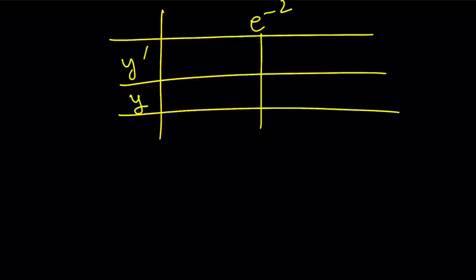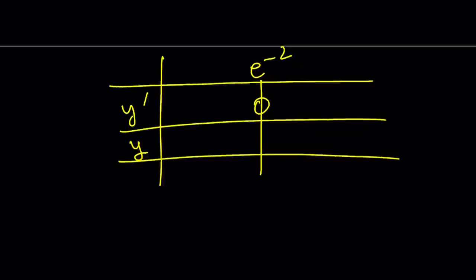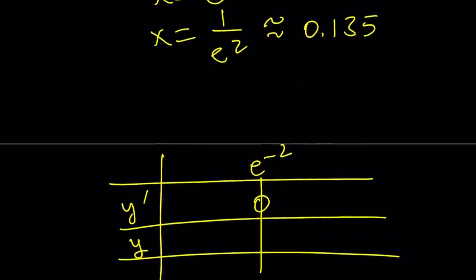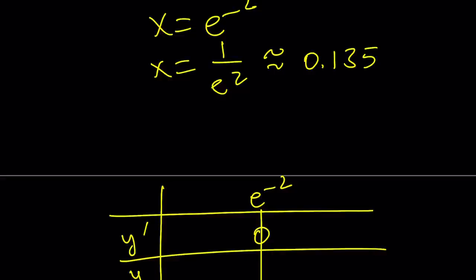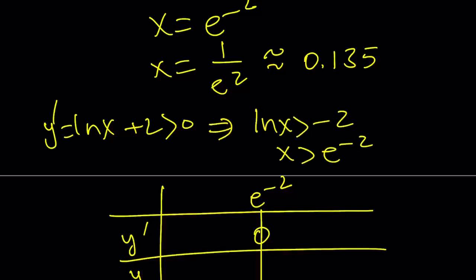So, this is e to the power of negative 2, which is the same as 1 over e squared. We have a root. And what happens to the right of e to the power of negative 2? Well, if LN x plus 2 is positive, the derivative is positive. Let's work backwards. That means LN x is greater than negative 2. That means x is greater than e to the power of negative 2. So, to the right of this,